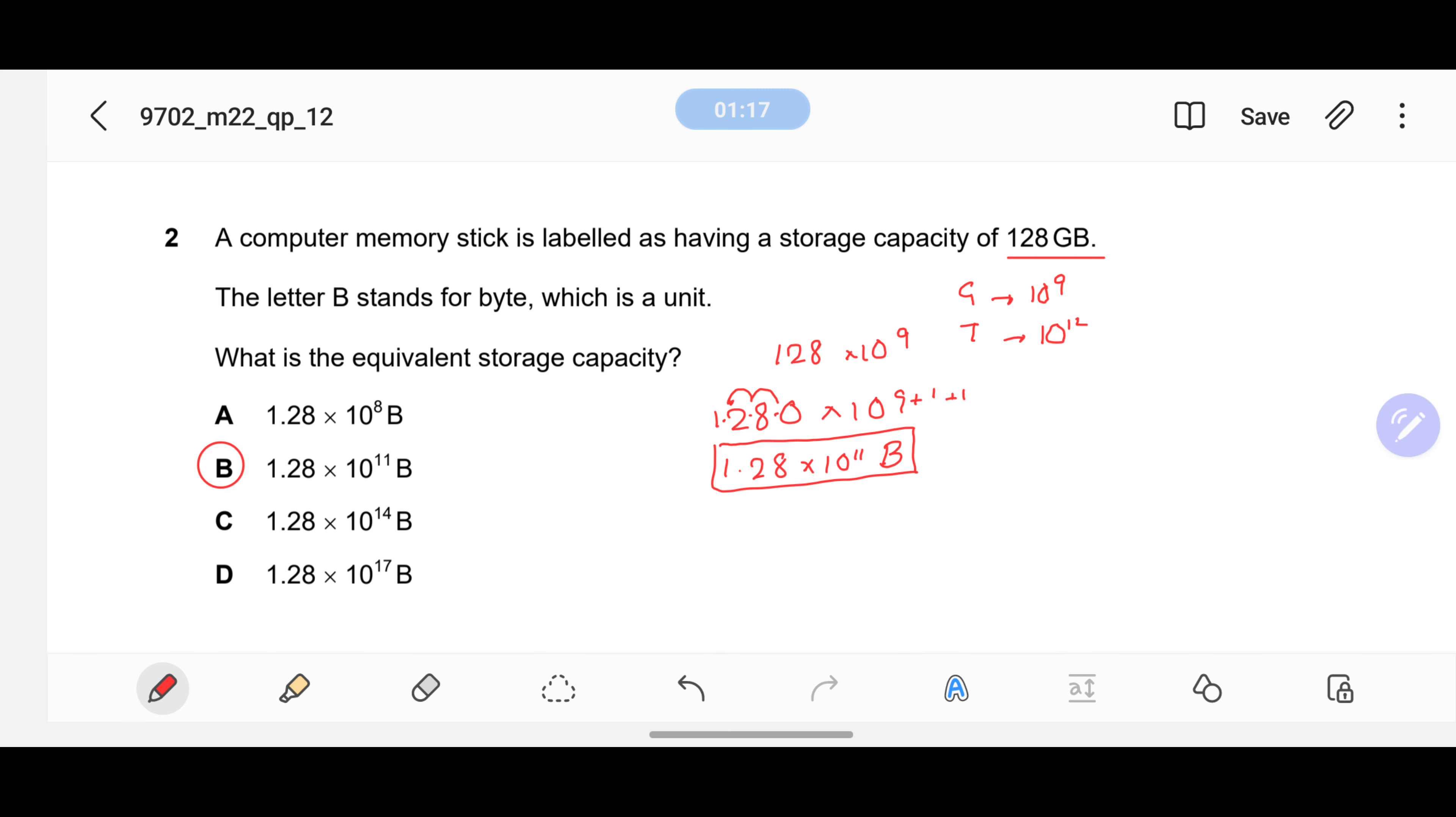1.28 × 10^11 bytes are in 128 gigabytes, so the answer is B.